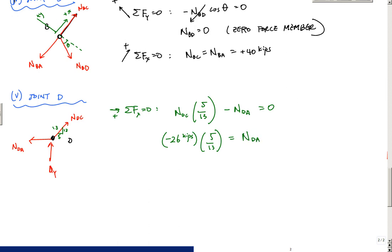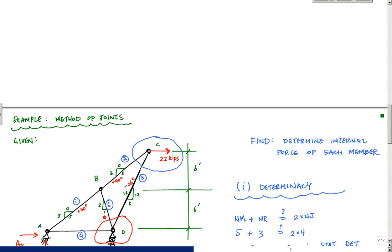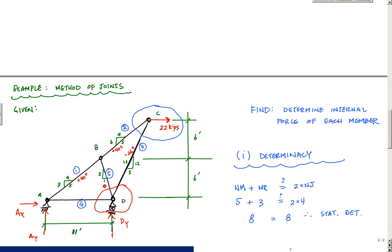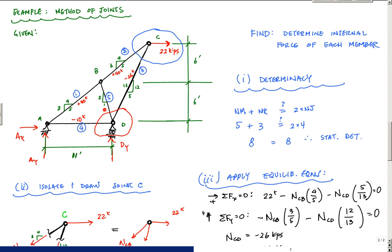And that tells me that NDA is negative 10 kips. NDA is equal to minus 10 kips, indicating that this last bar right here is in compression. This last member right here is minus 10 kips. And then I can go to joint A and calculate AX and AY. I hope that was useful and finished out our method of joints. I'll see you probably in the next video for method of sections and zero force members in the upcoming videos.